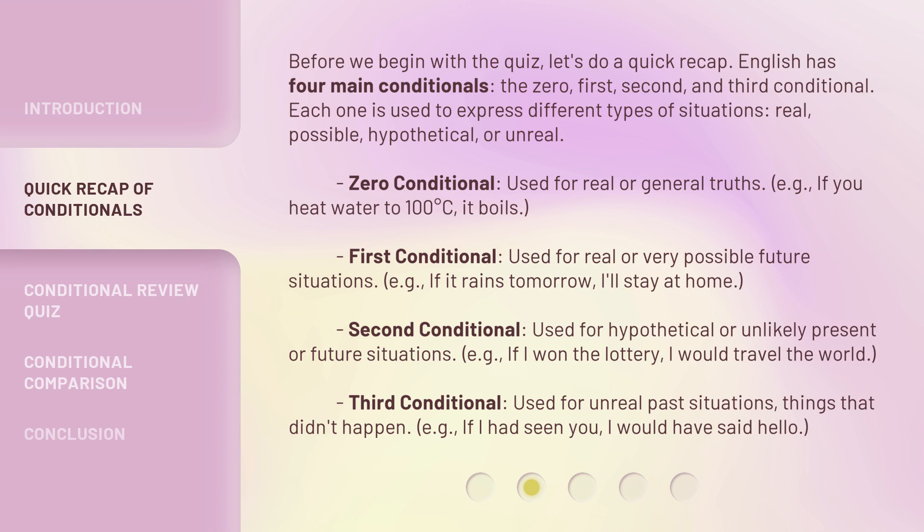Zero conditional: used for real or general truths. For example, if you heat water to 100 degrees Celsius, it boils. First conditional: used for real or very possible future situations. For example, if it rains tomorrow, I'll stay at home.